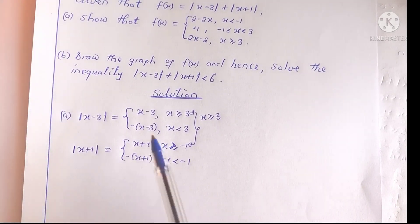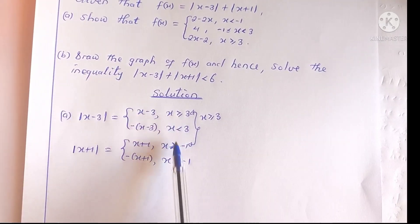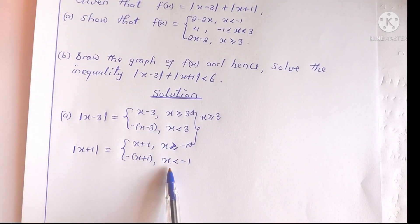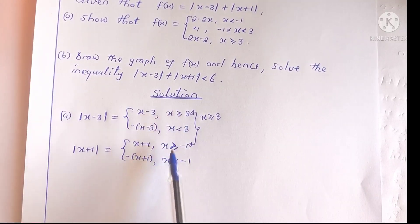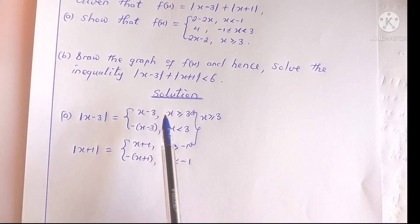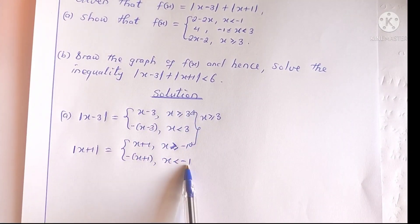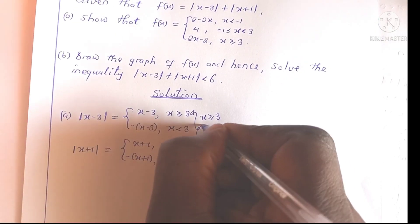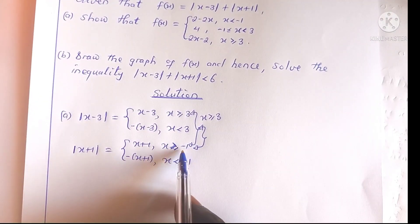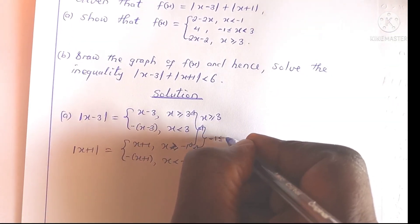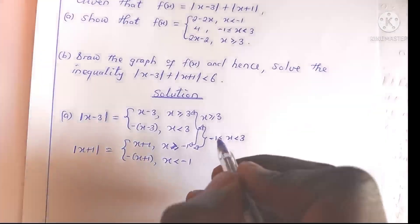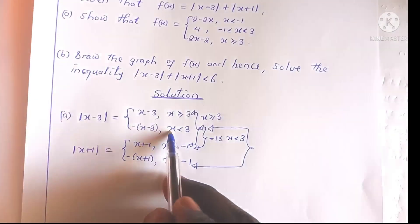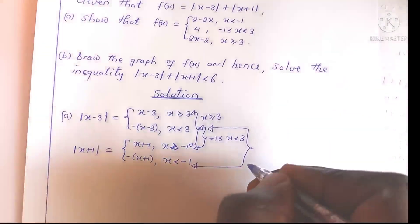If we take x greater than or equal to 3 and x less than negative 1, the intersection is an empty set — it is not possible for x to be both greater than or equal to 3 and less than negative 1 at the same time. Taking x less than 3 and x greater than or equal to negative 1, the intersection is the interval negative 1 less than or equal to x which is less than 3. And taking x less than 3 and x less than negative 1, the intersection is the interval x less than negative 1.